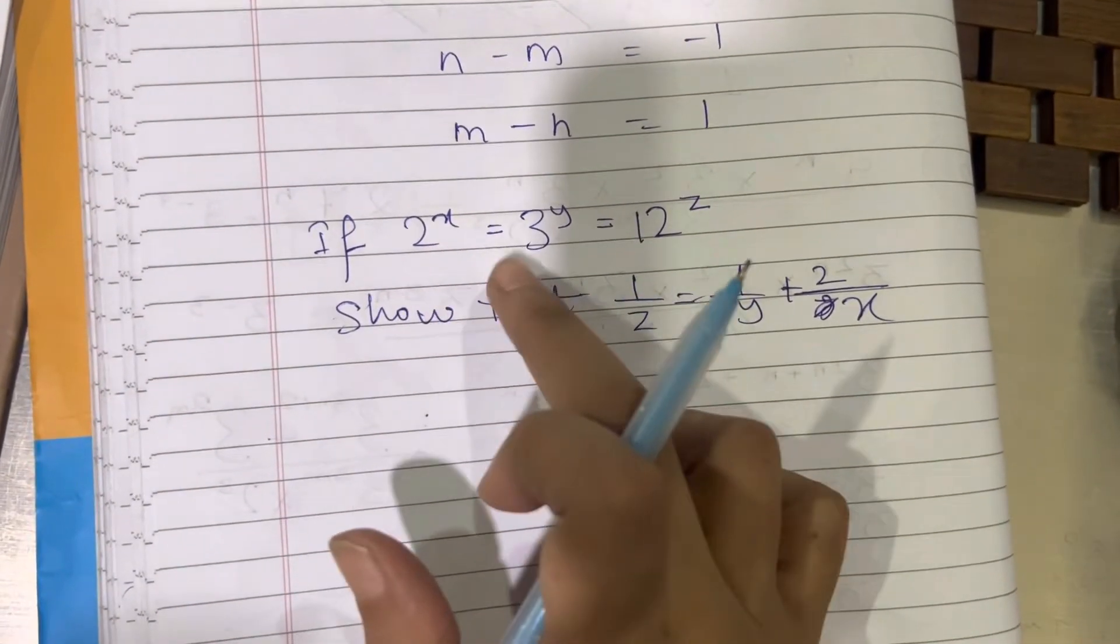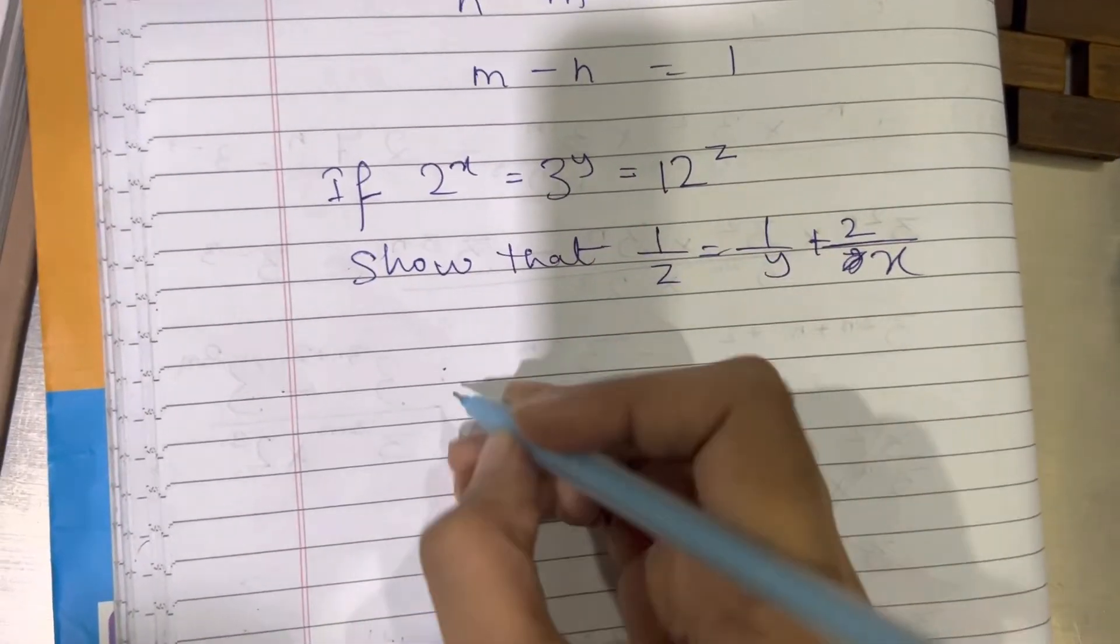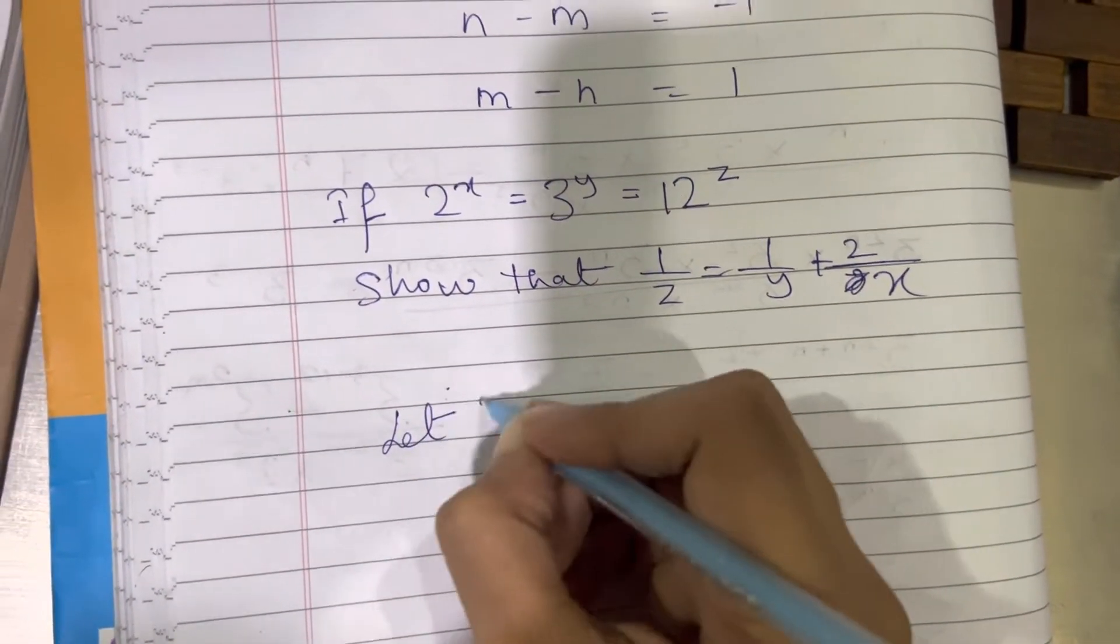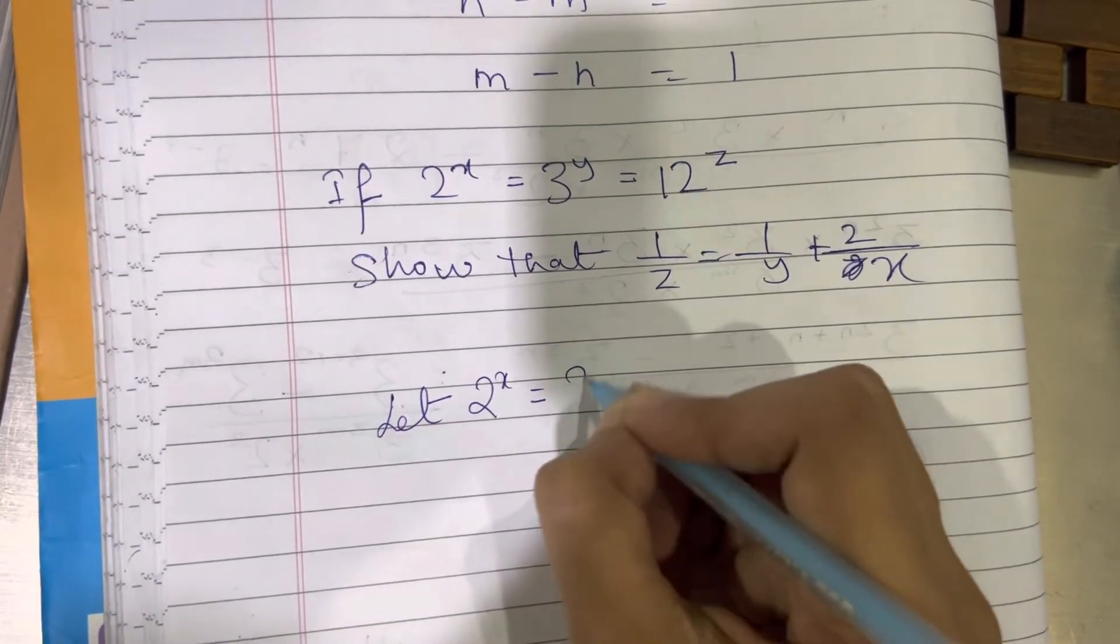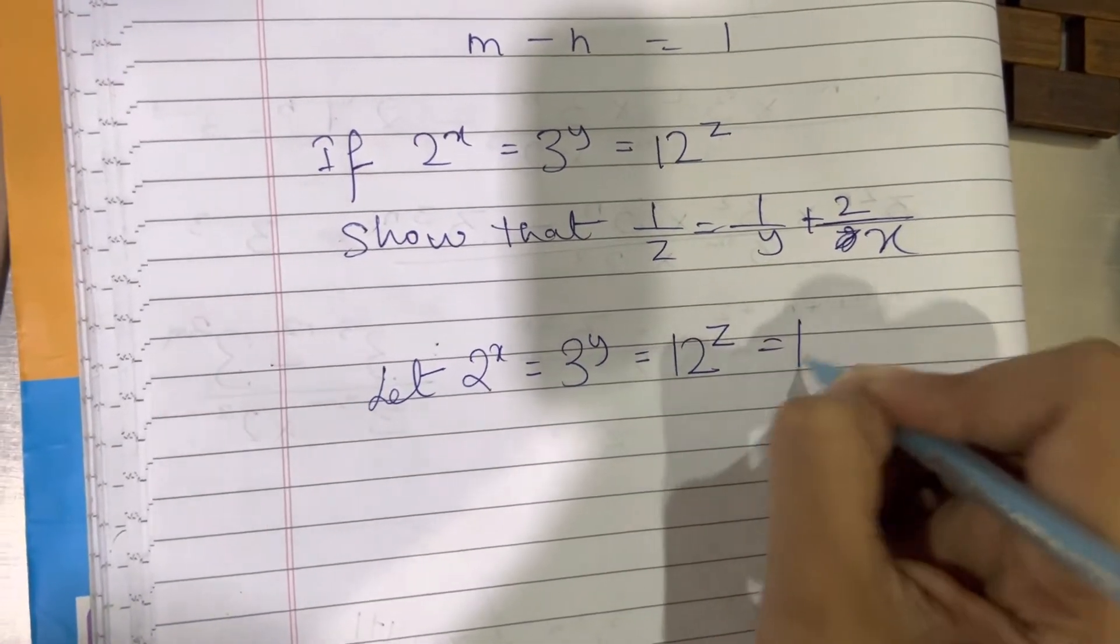Given as 2 to the power x equals 3 to the power y equals 12 to the power z. So these 3 are equal. So let 2 to the power x equals 3 to the power y equals 12 to the power z equals to k.